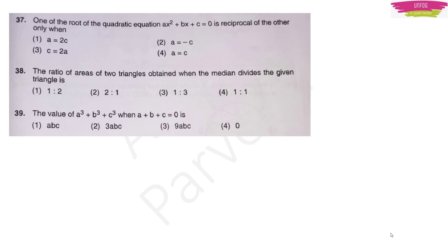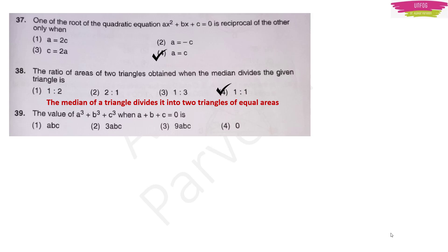One root of the quadratic equation ax² + bx + c = 0 is the reciprocal of the other only when a = c. The ratio of areas of two triangles obtained when the median divides a given triangle: the median divides a triangle into two triangles of equal area, so the ratio is 1:1. Option 4 is the right answer.